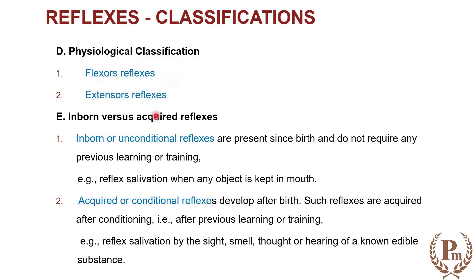Reflexes can also be classified as inborn or acquired. Inborn reflexes are those you are born with — like salivation, sucking reflex, and grasping reflex. Nobody has to teach these; as soon as you put something in a baby's mouth, reflex salivation starts. That is an unconditional reflex. The reflex that you acquire is called a conditioned reflex — something you develop after birth through learning or training.